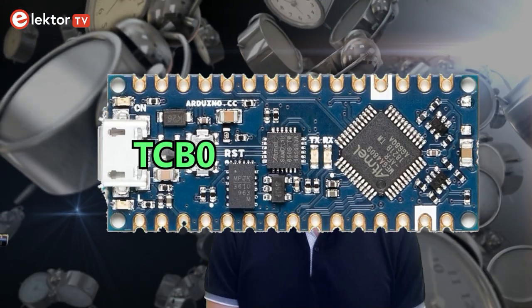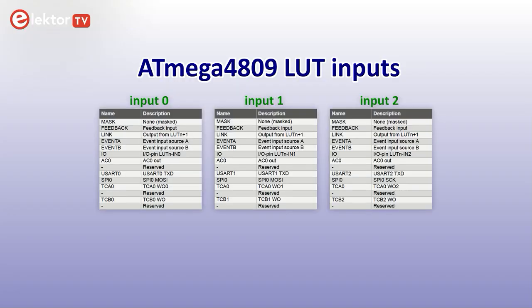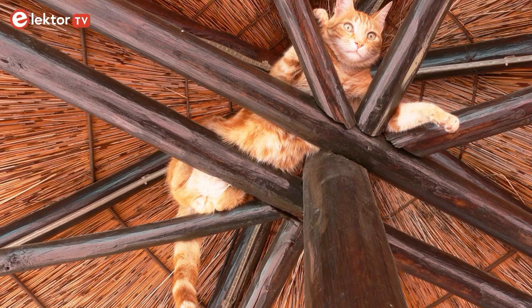Also, messing with TCA0 interferes with the delay and millis functions of Arduino, even though they use timer TCB3. This is because TCB3 is said to use the same 250 kHz clock as TCA0. But we need a timer running at 1 MHz. If we can't use TCA0, then can we use one of the TCB timers? The ATmega4809 has four of them, three of which are used by Arduino. TCB0 and TCB1 are used for PWM on Arduino pins D6 and D3 respectively, and TCB3 is used for timekeeping with millis and delay. TCB2, however, is free and so we can claim it. Unfortunately, a TCB2 can only be routed to input 2 of a LUT — the only LUT input that also accepts the SPI SCK signal that we absolutely need. Does this mean that we are stuck? No, we are not.